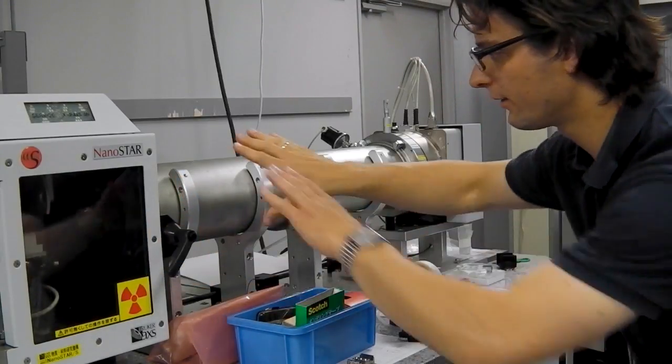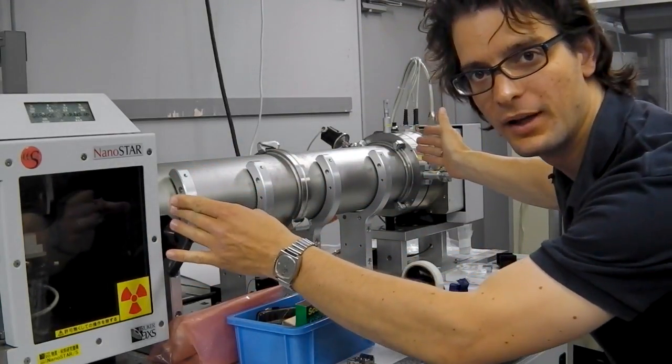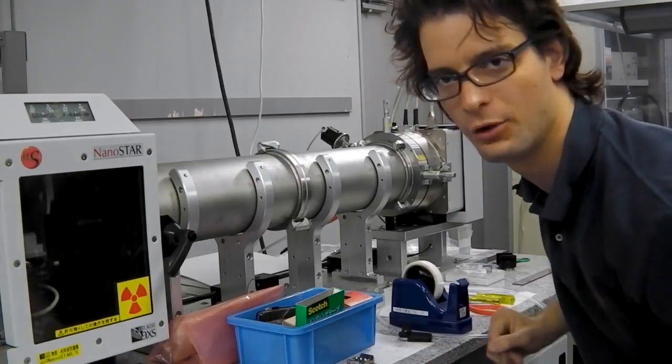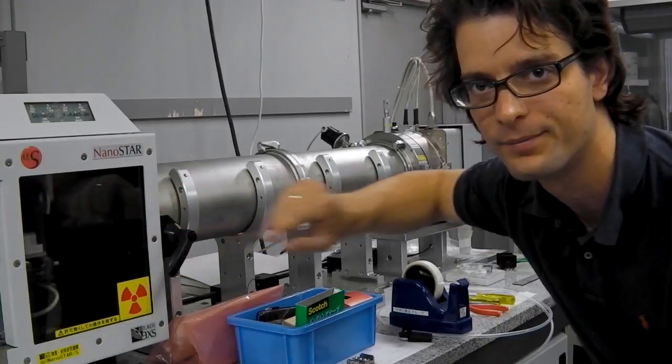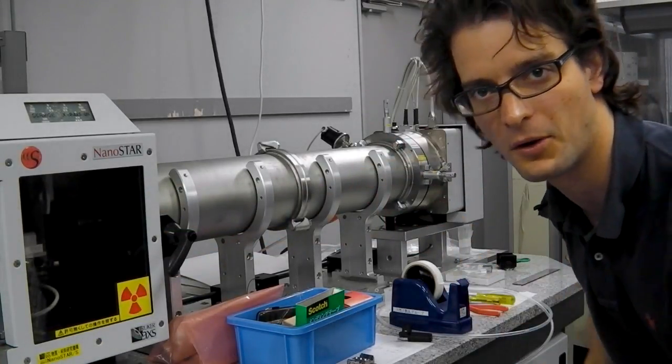Now after the sample, we have a flight tube. This flight tube is nothing more than an empty vacuum tube to create some distance between the detector and our sample. So this way we can measure to small angles.